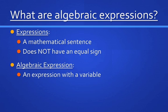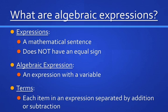Think about it — in algebra, you have variables and terms. A term is an item in an expression separated by addition or subtraction. I honestly think saying that it's separated by addition or subtraction is probably the most straightforward, easiest way to see how many terms there are in an expression.